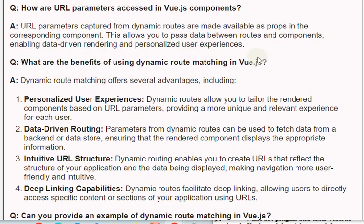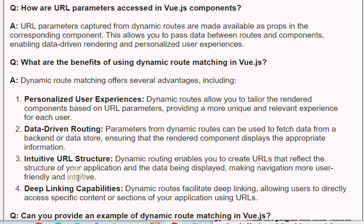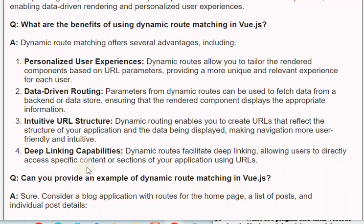Q: What are the benefits of using dynamic route matching in Vue.js? A: Dynamic route matching offers several advantages, including: 1. Personalized user experiences — dynamic routes allow you to tailor rendered components based on URL parameters. 2. Data-driven routing — parameters can be used to fetch data from a backend or data store. 3. Intuitive URL structure — dynamic routing enables URLs that reflect your application's structure, making navigation more user-friendly. 4. Deep linking capabilities — dynamic routes allow users to directly access specific content using URLs.